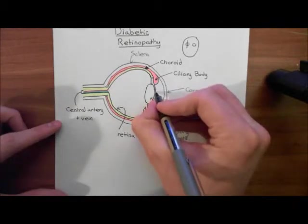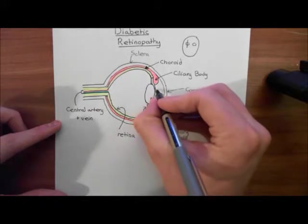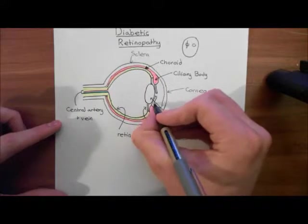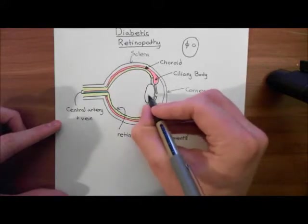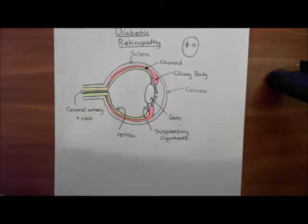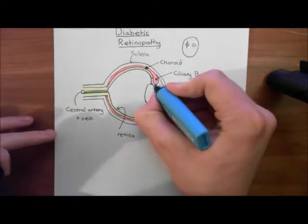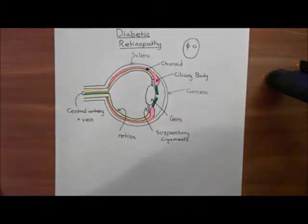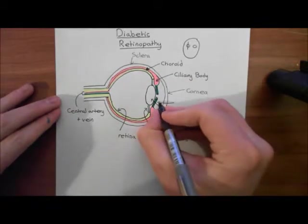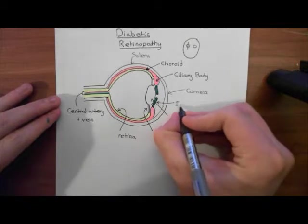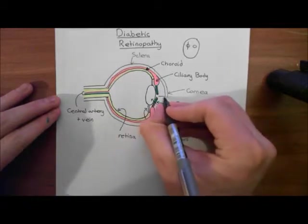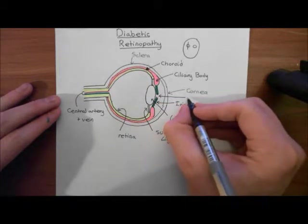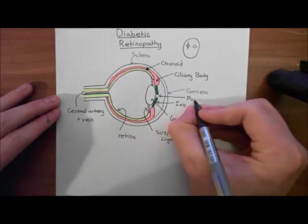So what else do we need to add? Well, we need to finish off what we've got up here. So we now need to add in the iris. This is the bit that makes your eye appear colored, with the pupil right at the center through which light will move. I might color the iris in blue, so you'd have blue eyes in this case. So this is the iris, and the gap in the middle, it's a circular muscle, an annulus of muscle really, and that's called the pupil.